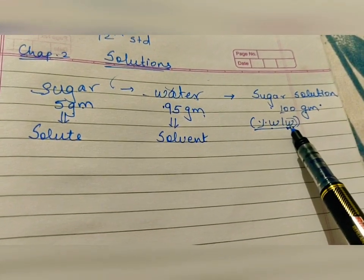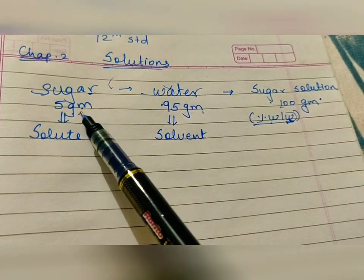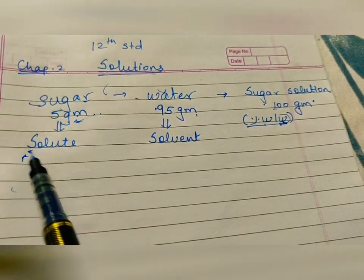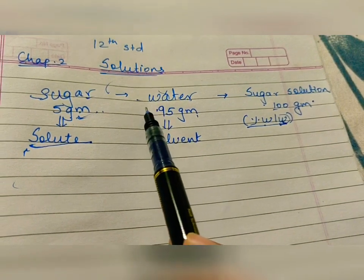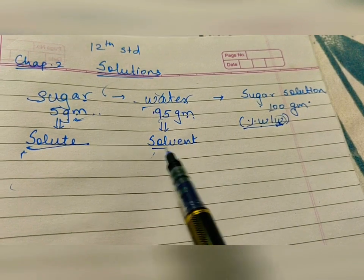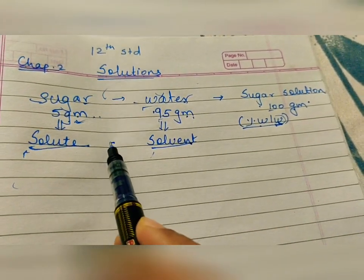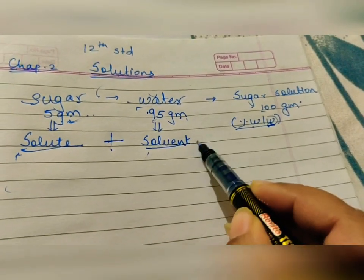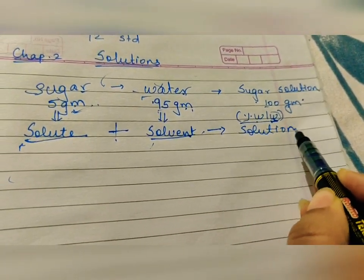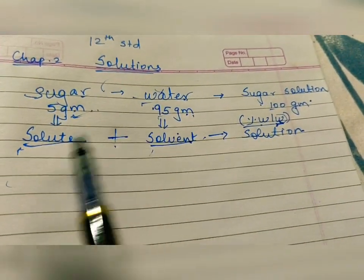Which substance is present in less quantity? Sugar — 5 grams. So sugar is considered the solute. And water — 95 grams — is considered the solvent. Together, solute and solvent make the solution. Solution comprises solute and solvent: solute present in less quantity and solvent present in more quantity.